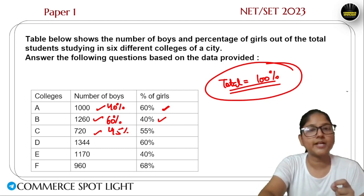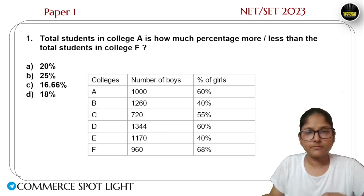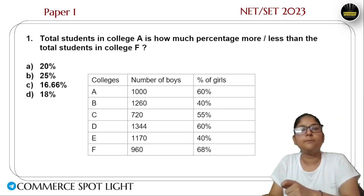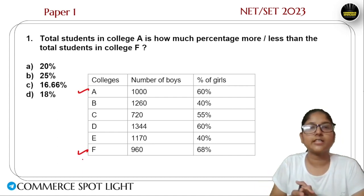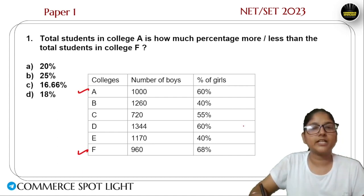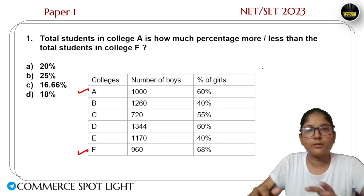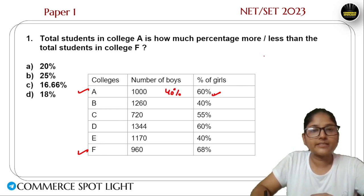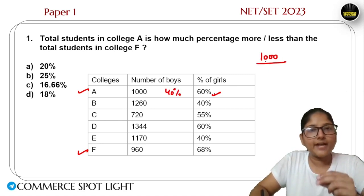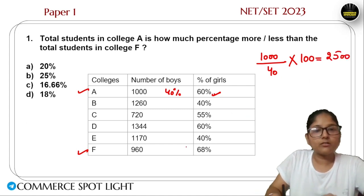Let's solve the questions one by one. In the first question, it is asking about the total students in College A and College F — how much more or less. So to find total students, I need to use the boys' value. For College A, 60% are girls so 40% are boys, and 40% equals 1000. So total equals 1000 divided by 40 multiplied by 100, which gives 2500.